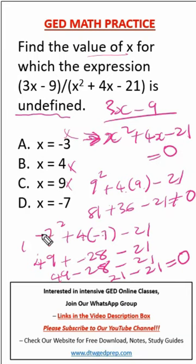So the value of x for which this expression will be undefined is D, that is negative 7. This is how you solve these questions under undefined in GED maths.